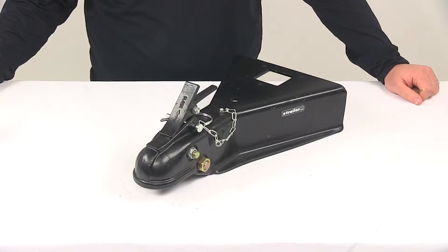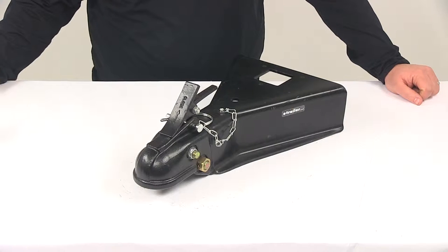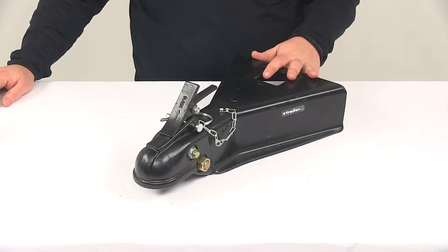Today we're going to be taking a look at an A-frame trailer coupler for a 2 and 5/16 inch hitch ball. This A-frame coupler is going to let you hook up your trailer to your tow vehicle.